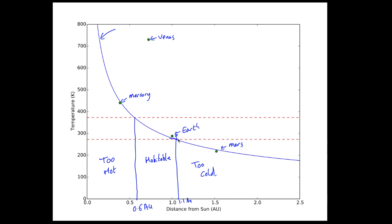So that's good. Earth is habitable. We knew that. How about the other planets? Well, Mercury is clearly too hot. Mars is clearly too cold.